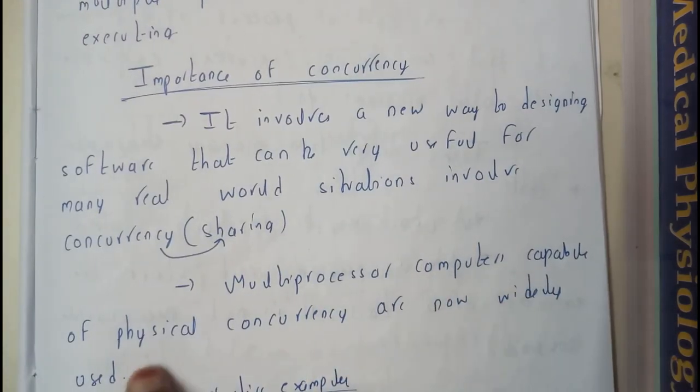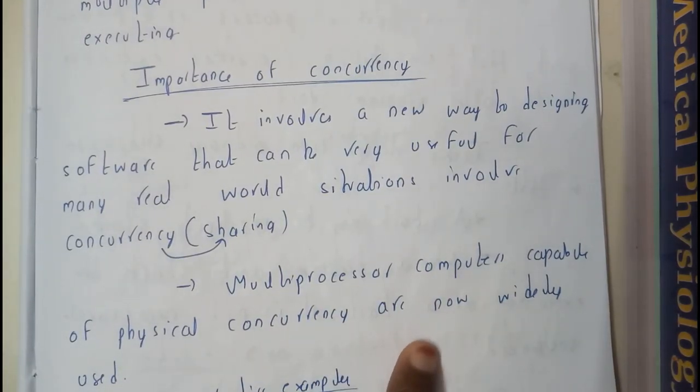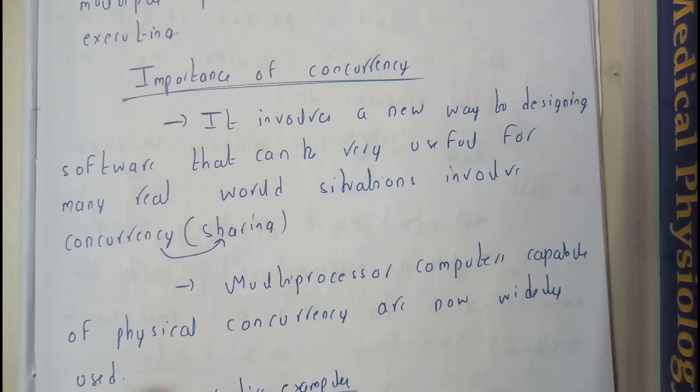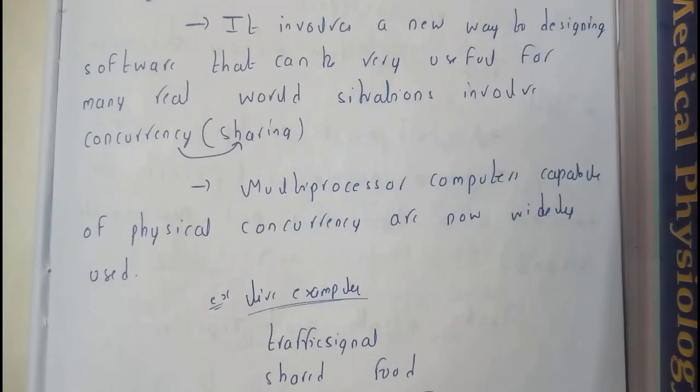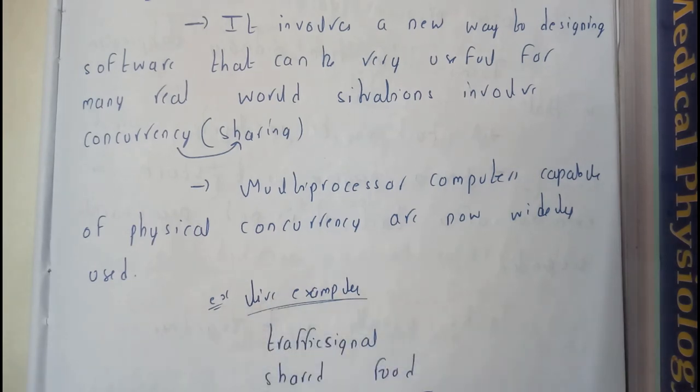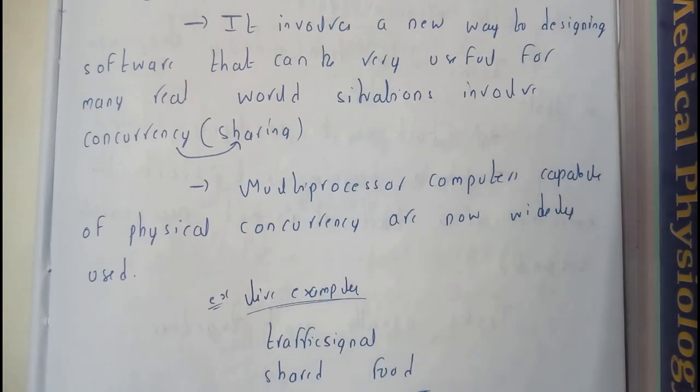Multiprocessing computers capable of physical concurrency are now widely used. We can say live examples are traffic signals and shared resources. They will be shared between things.